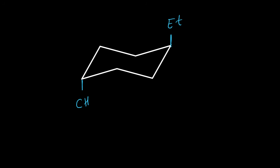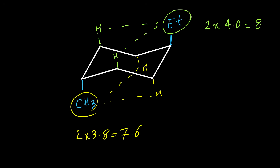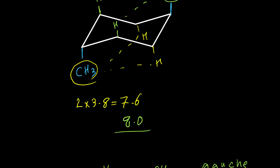Here is the next example: calculating the strain for a conformer with ethyl on axial position and methyl also on axial position. The axial ethyl has interaction with 2 hydrogens, so the value for ethyl is multiplied by 2. The axial methyl also has interaction with 2 hydrogens, so the value for methyl is also multiplied by 2. From methyl we have 7.6 kJ strain and from ethyl we have 8 kJ, so the total strain for this molecule is 15.6 kJ/mol.